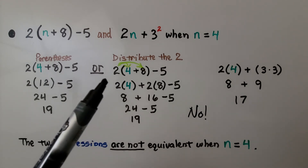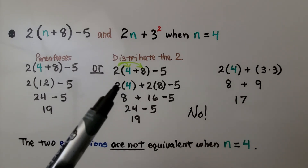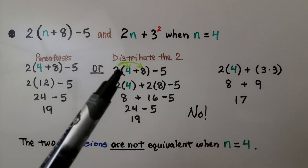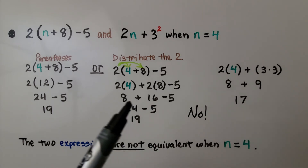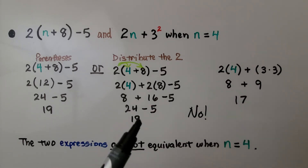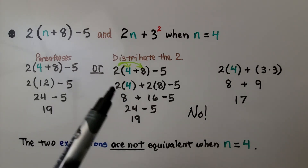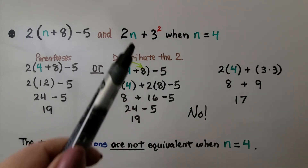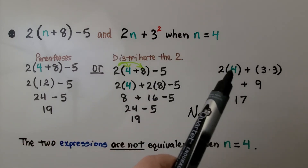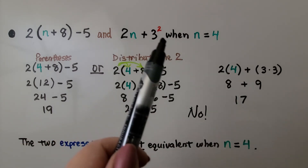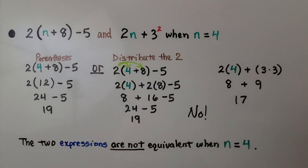We could also use the distributive property: 2 times 4 is 8, and 2 times 8 is 16, minus 5. That gives 24 minus 5, which equals 19. So whether we do within the parentheses first or distribute the 2, we get 19. For the second expression, substituting 4 for n, we have 2 times 4, which is 8, plus 3 raised to the second power — 3 times 3 is 9. So 8 plus 9 equals 17.